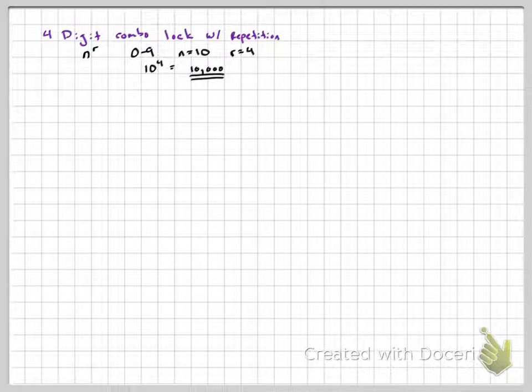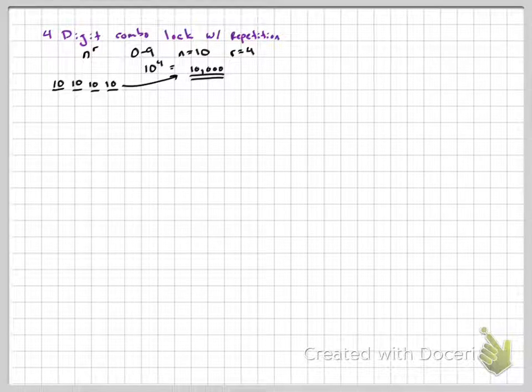So there are 10,000 different combinations if repetition is allowed for a four-digit combo. Now remember, we can still do FCP. 1, 2, 3, 4, I'm choosing four times. Because repetition is allowed, I have 10 choices each time. Still get the same answer.